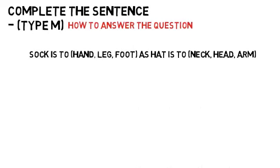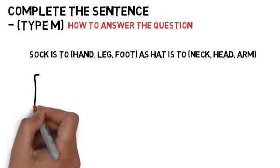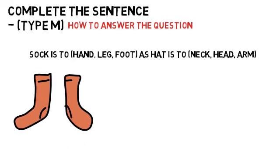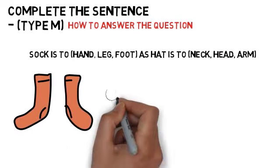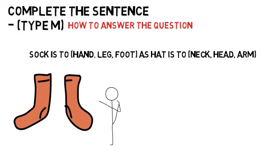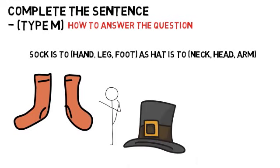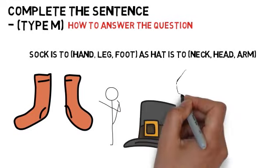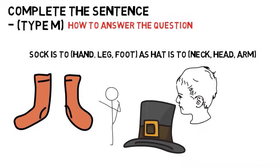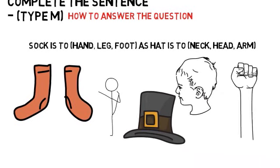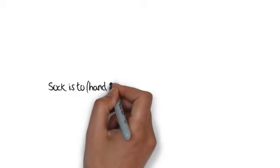How to answer the question: you are looking for two words that complete the sentence you have been given. First, find a relationship between the first word and a word in the first group of bracketed words. Once you have a relationship between the first words, it is easy to use this relationship to pick the second word you need to find.